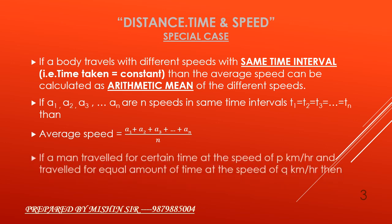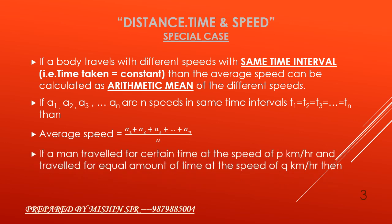Now if a man travelled for certain time at the speed of p kilometer per hour and travelled for equal amount of time at the speed of q kilometer per hour, then average speed will be (p + q) / 2 kilometer per hour.